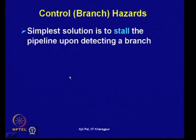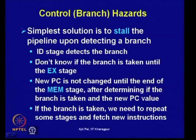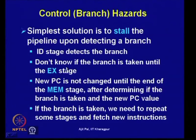The first and simplest solution is to stall the pipeline upon detecting a branch. As soon as a branch is detected, the pipeline stalls and waits until the branch address is known. The ID stage detects the branch; after decoding, it is known whether the instruction is a branch. We then proceed to the execution stage, where the branch condition is tested.